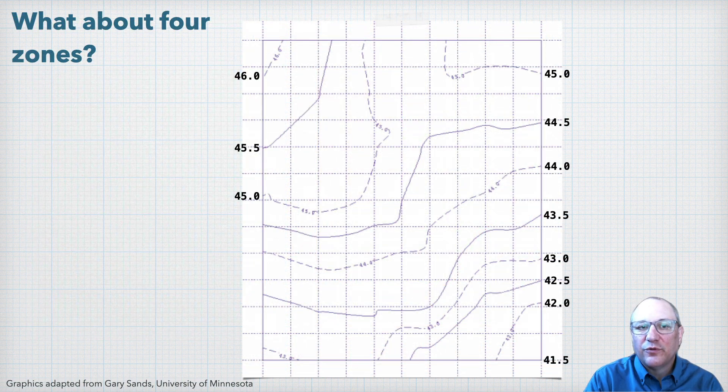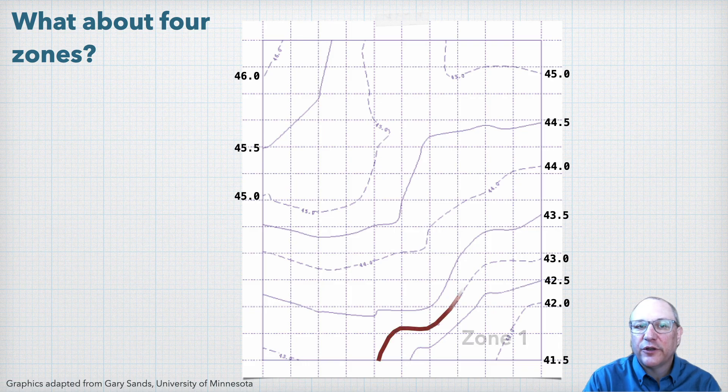What if we want even more control? Well we can look at four zones, here with a mix of one-foot and 1.5-foot zone elevation intervals like this.